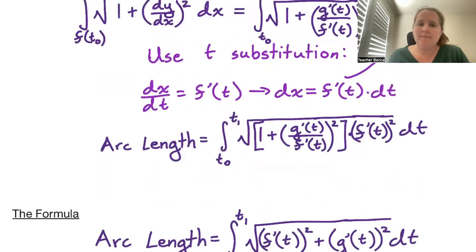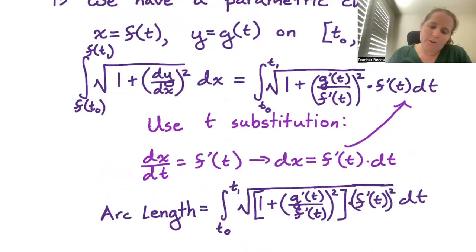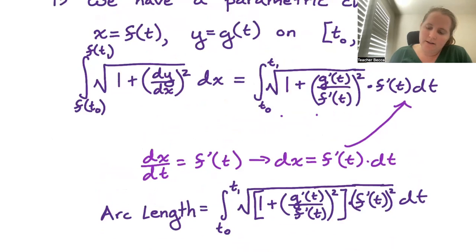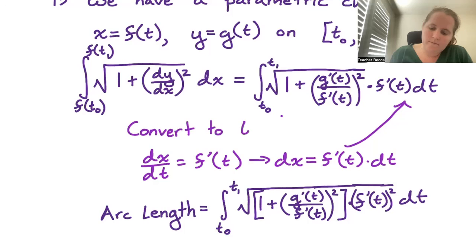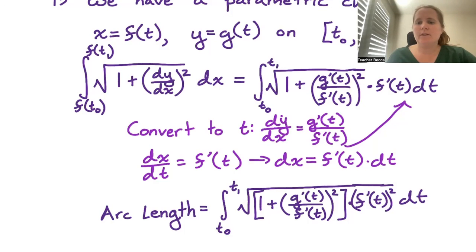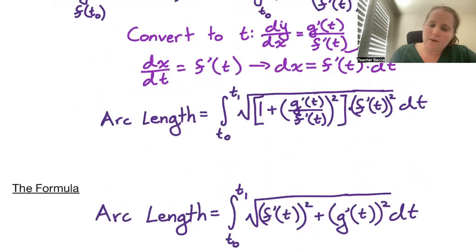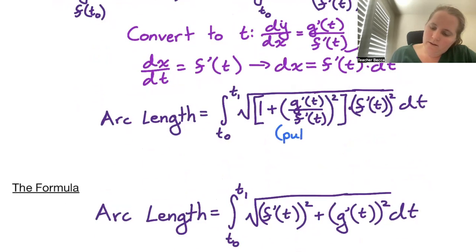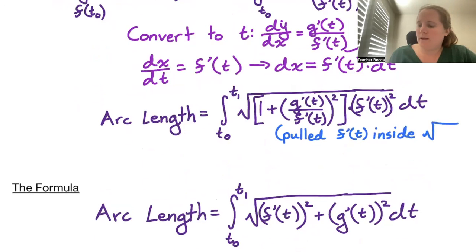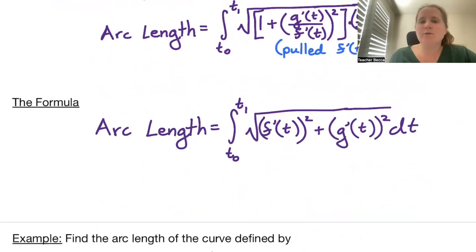To recap what we did: we knew that dy/dx equals g prime of t over f prime of t. We found dx equals f prime of t dt. Then we pulled f prime of t inside the square root, and in the last step distributed to get f prime of t squared inside.